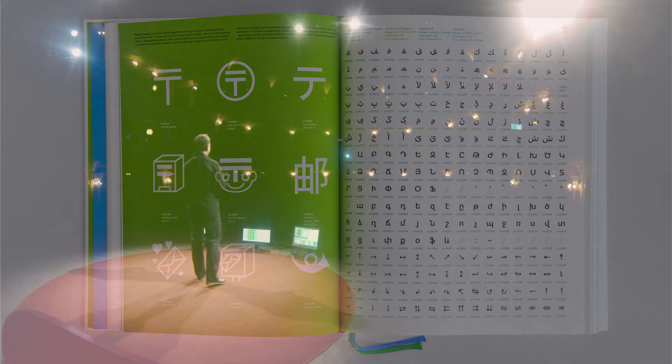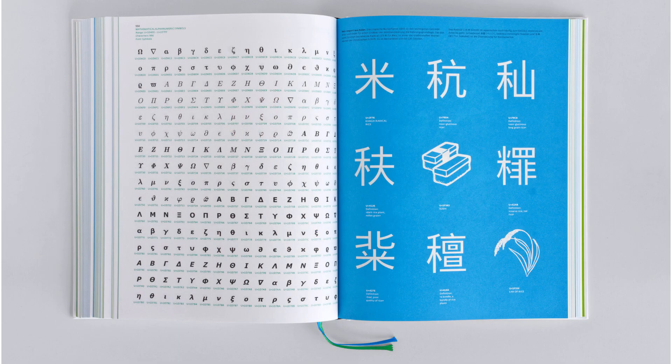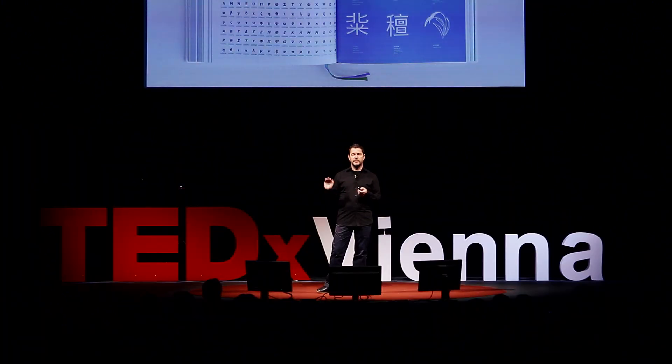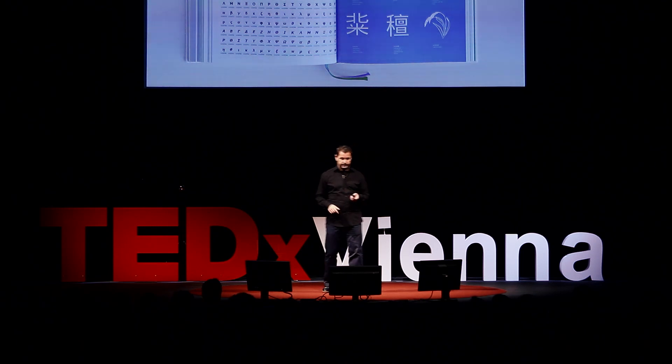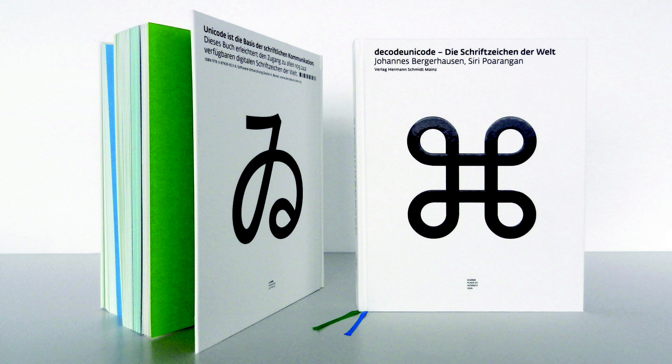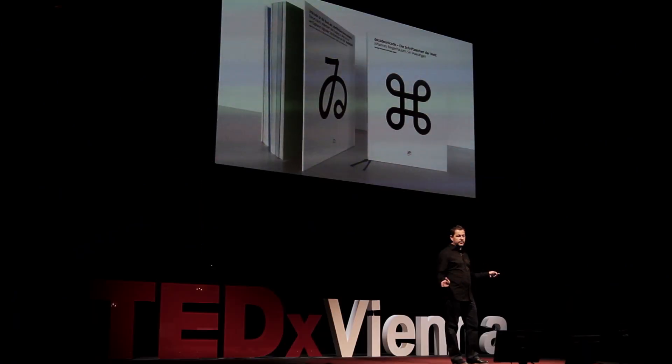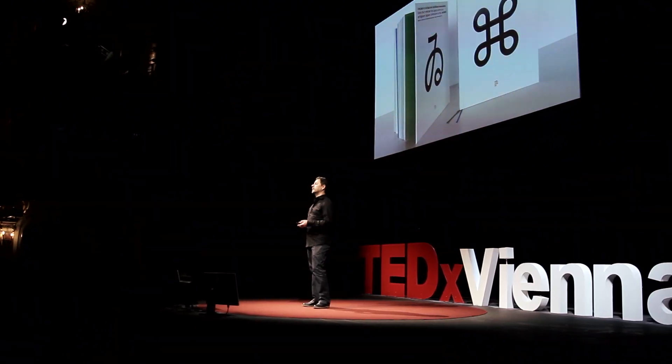We did a hundred extra pages in color where we present and discuss some funny, important, weird, and special characters. We even included all the Chinese characters. There were so many that we had to print them on Bible paper so that the weight of the book stayed below two kilograms. This is the book — more than 600 pages, composed using 66 different fonts because there's no single pan-Unicode font. We even had to draw about 150 characters ourselves. This was the most difficult part of the job.